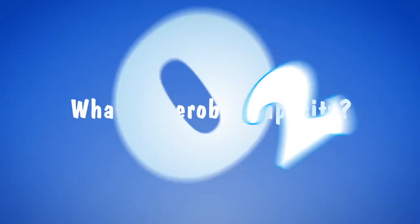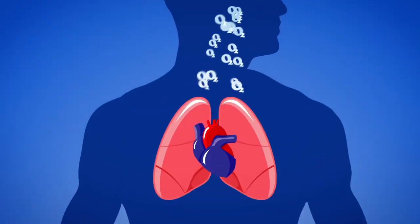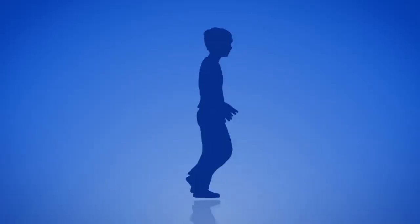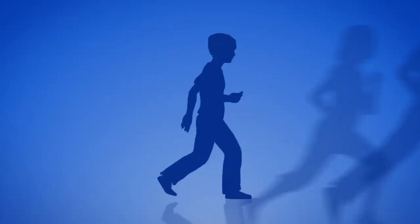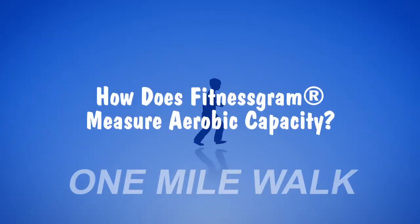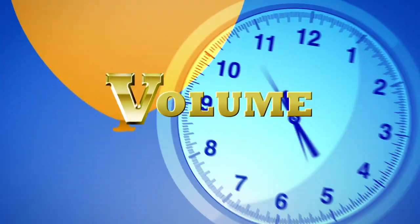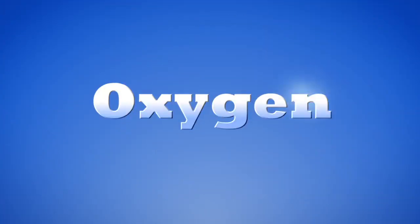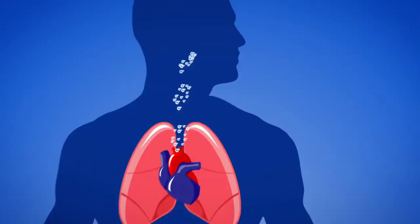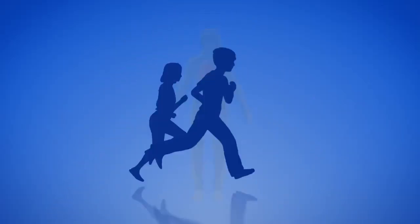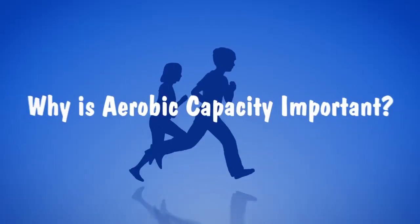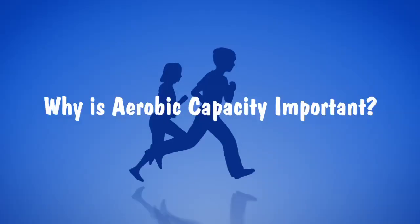What is aerobic capacity? Aerobic capacity is the body's ability to take in, transport, and convert oxygen to energy during exercise. How does FitnessGram measure aerobic capacity? The gold standard measure is VO2 max — V is for volume, or how much per unit of time; O2 is for oxygen. VO2 max is the maximum rate that your body can take in, transport, and use oxygen during exercise.